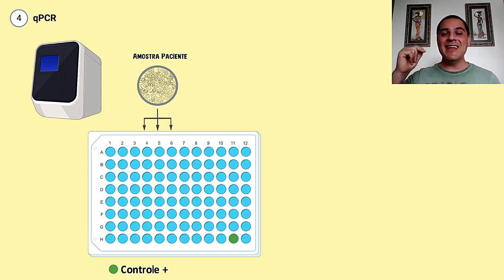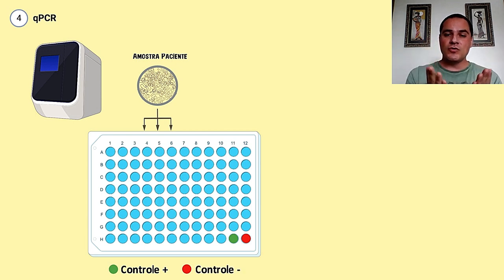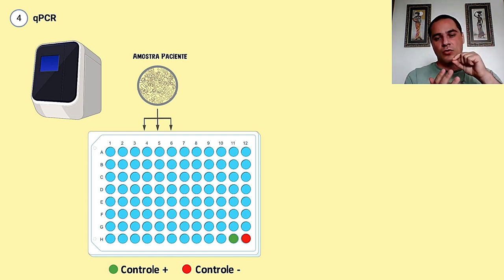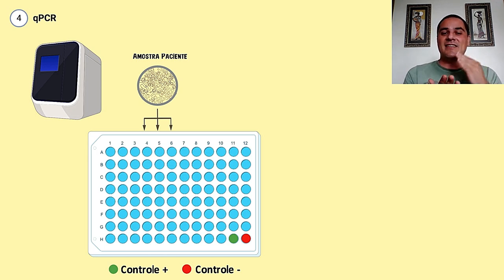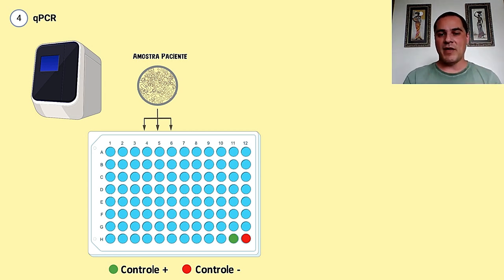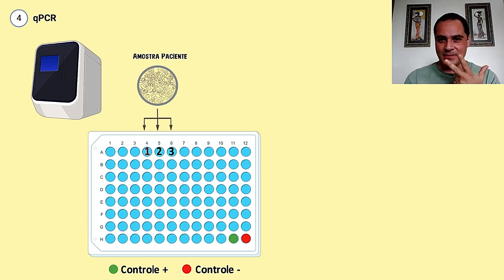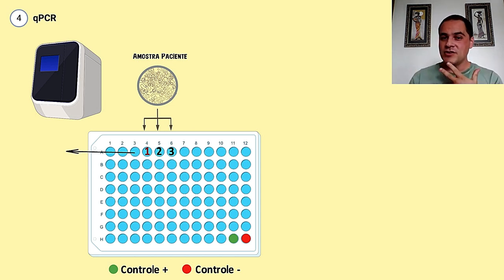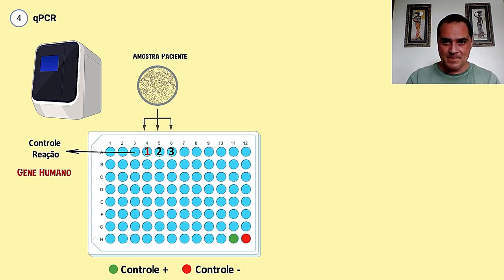Além disso, eu preciso de um controle negativo, que é eu colocar todos os reagentes sem o material genético — sem o cDNA de um paciente positivo. Essa amostra tem que dar sempre negativa para assegurar que todos os meus reagentes estão ok e não estão contaminados. Para cada paciente, a gente vai analisar três genes: um gene que a gente vai chamar de controle — que não é controle positivo, mas um controle da reação para dizer que a amostra do paciente está bem — e dois outros genes que vão ser genes específicos para o vírus.